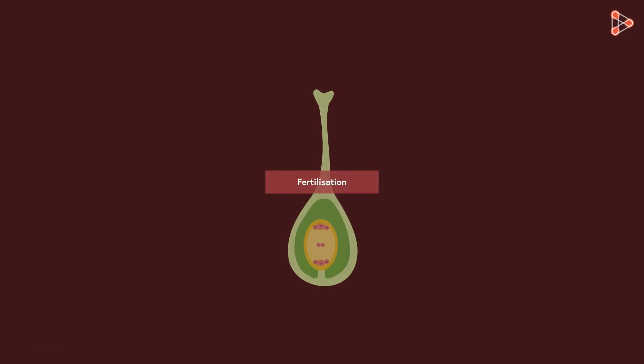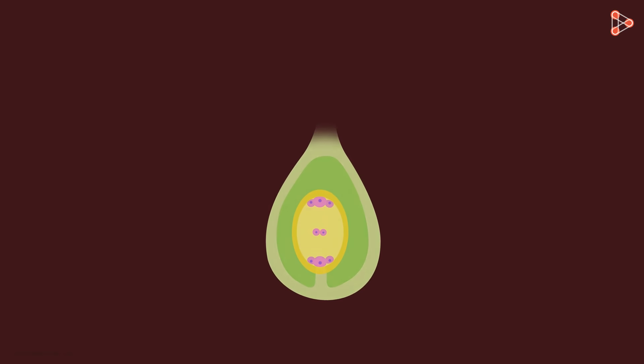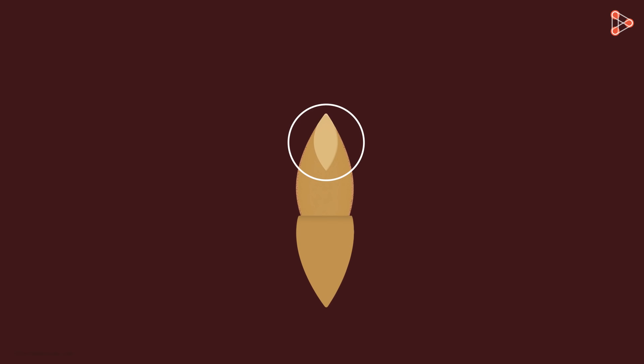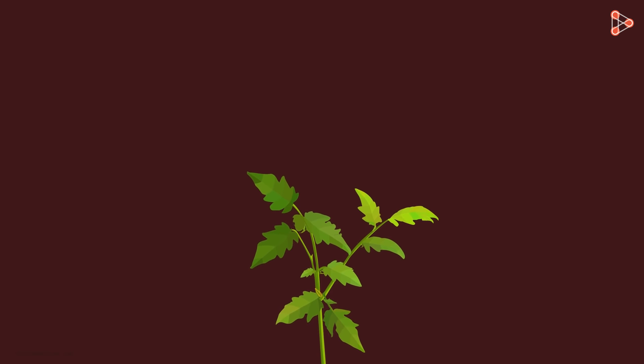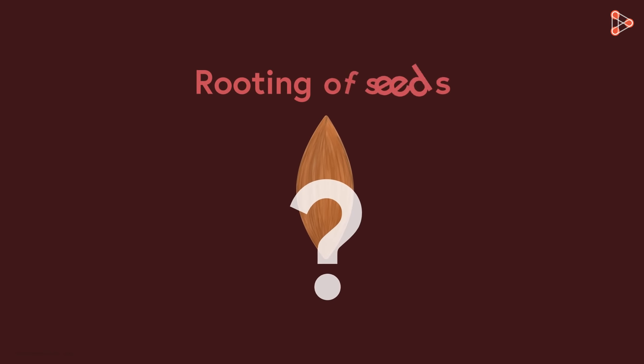In our previous video, we learnt the fertilization process and what it leads to. The process helps in the formation of fruits and seeds enclosed in them. The seeds are the structures containing the embryo within. Now all that's required is proper rooting of the seeds in the soil. This will result in germination and thus growth of a new plant. But now the question arises: how are these seeds fixed in the soil?